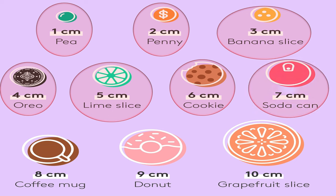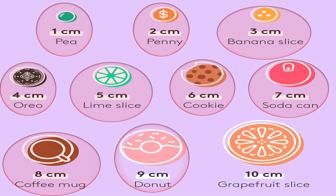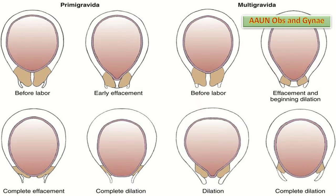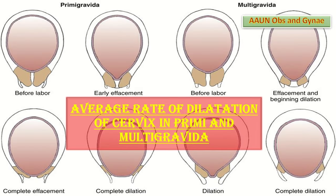Seven centimeters dilatation is like a soda can; eight centimeters like a coffee mug; nine centimeters like a donut; and ten centimeters dilatation means the cervix is dilated like the size of a grapefruit slice.